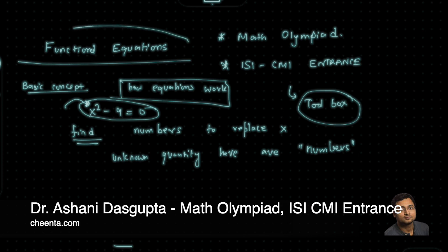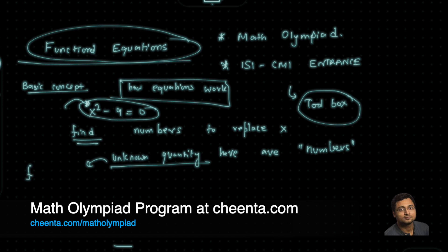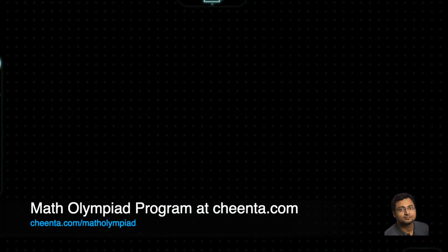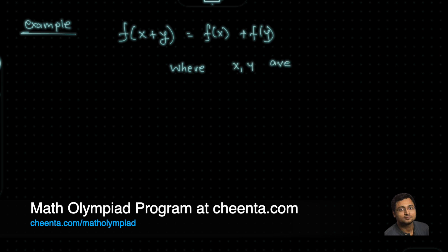In the case of a functional equation, the unknown quantity would be functions. It's better explained with an example. Suppose we are given that f(x + y) = f(x) + f(y), where the input values — that is x, y, etc. — are integers.